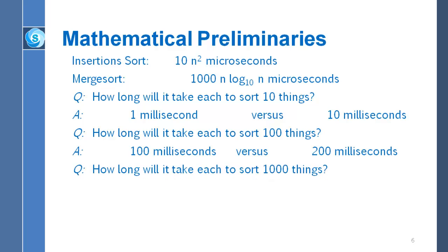And if you then increase n to 1000, well then you'll quickly see that there's a turnaround here, because insertion sort now takes 10 seconds while merge sort only takes 3 seconds. So we've crossed over and suddenly merge sort is beating insertion sort.